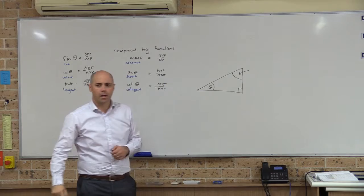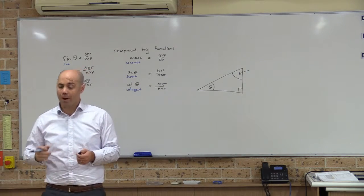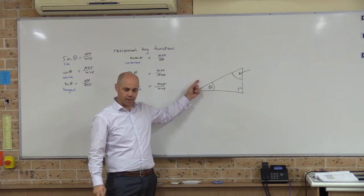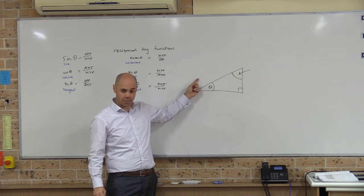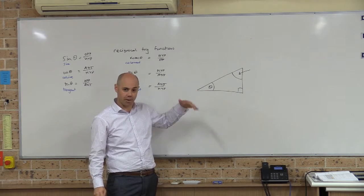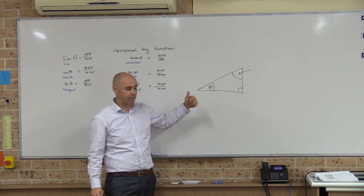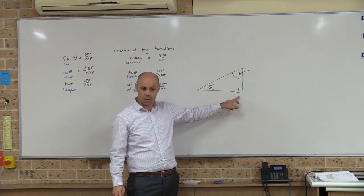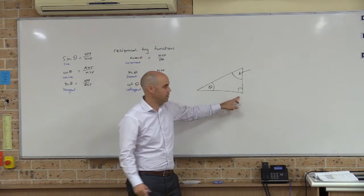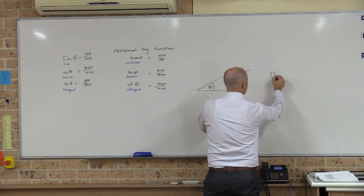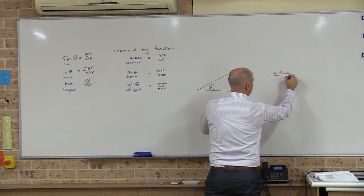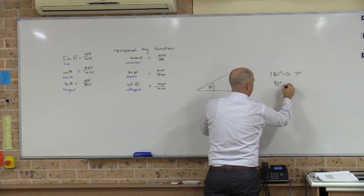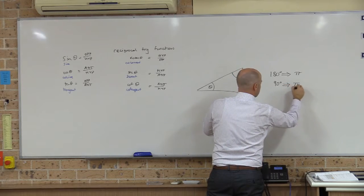How many radians is the angle sum of a triangle? We know that in degrees it's 180, but how many radians is 180 degrees? Pi. So 180 degrees is the same as pi radians, and 90 degrees is the same as pi over 2 radians.